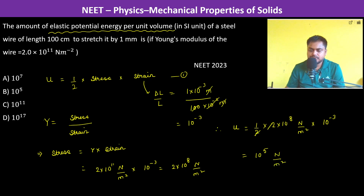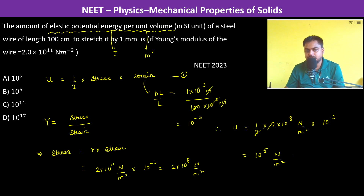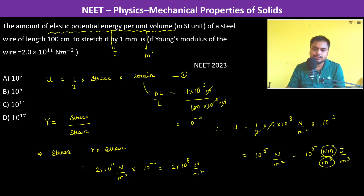About the unit — since it is energy per unit volume, the unit is joule per meter cube. Multiplying numerator and denominator by meter: 10⁵ newton·meter per meter cube equals 10⁵ joule per meter cube. Therefore the answer is B.